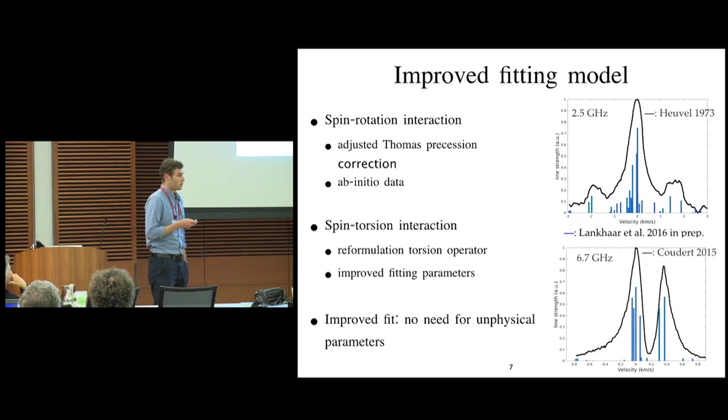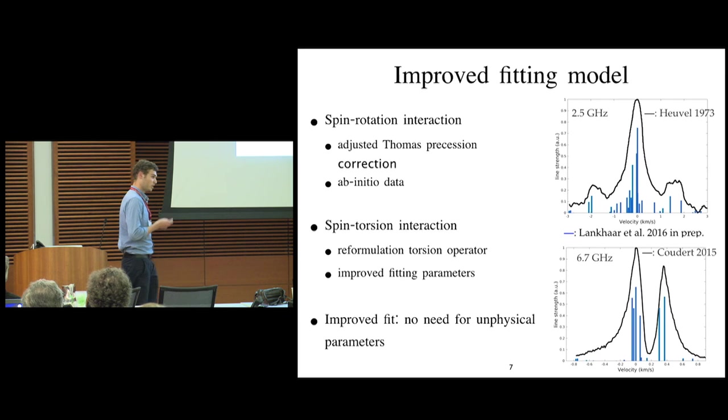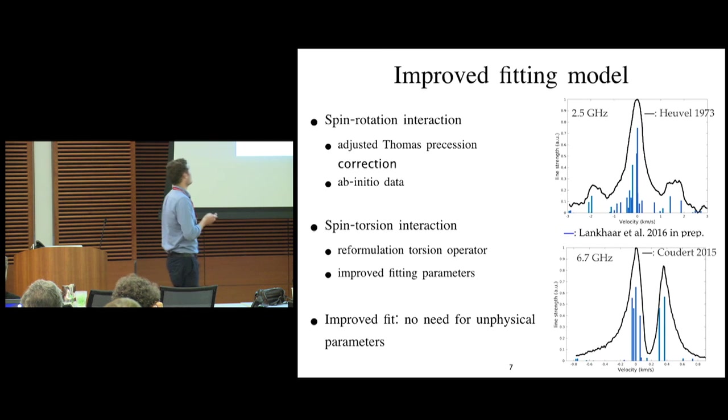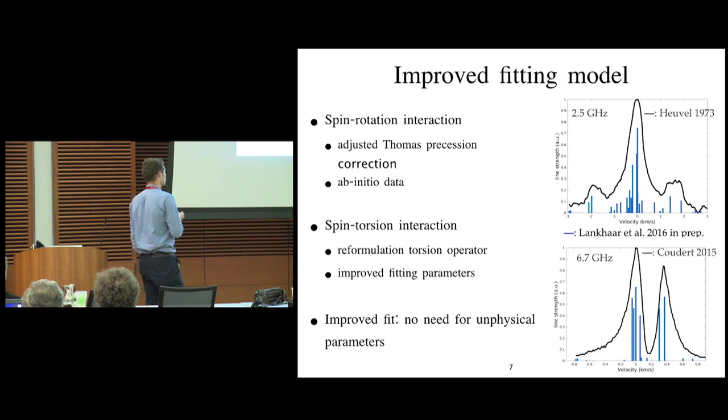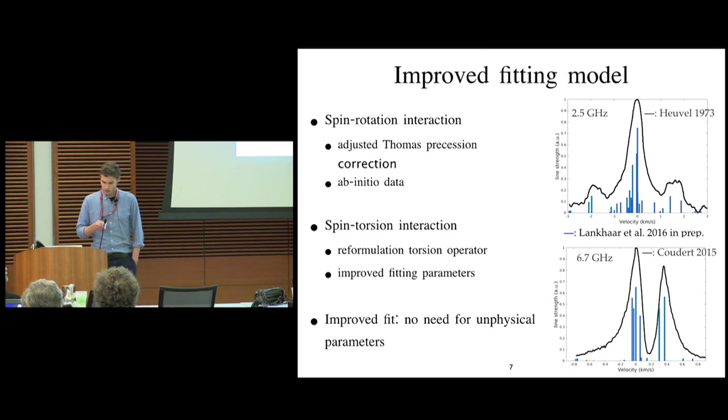So we've tried to come up with an improved fitting model, and we've done that by re-deriving all of the terms that have been used so far in the fitting models. And we came to the conclusion that the Thomas precession factors in the old models, they've been applied wrongly. So we fixed that. We calculated with quantum chemical methods what the parameters are. And we've worked out how the torsion interacts with these magnetic moments. So we had to reformulate the torsional operator they've been using in the current analysis, and thusly also improved the fitting parameters.